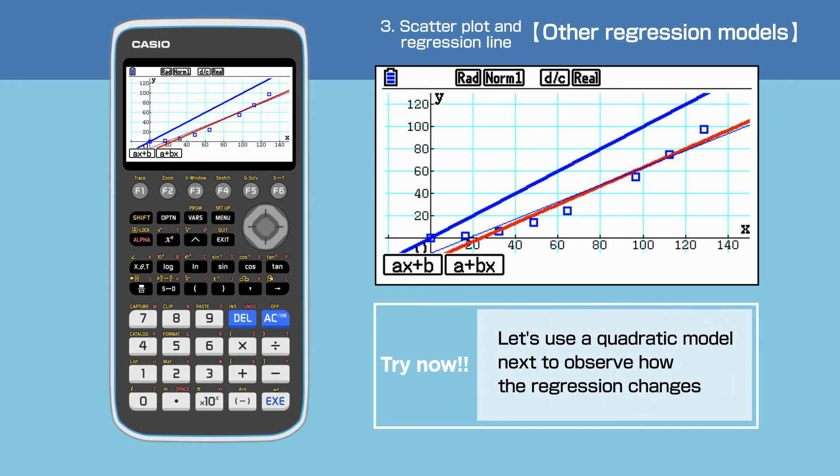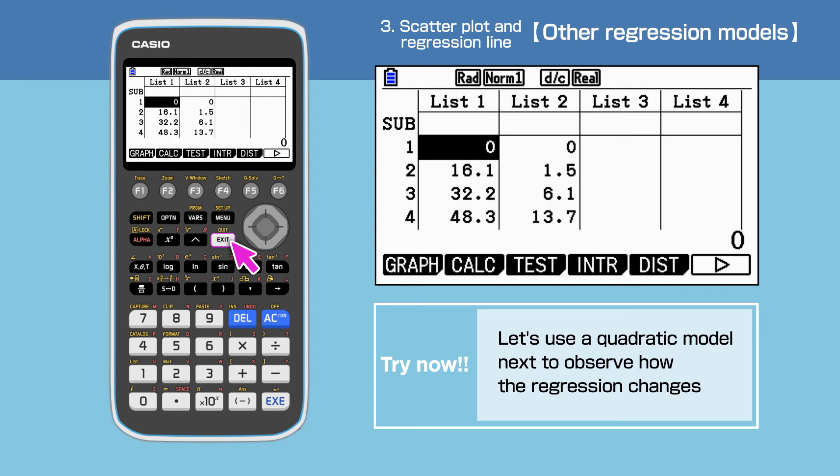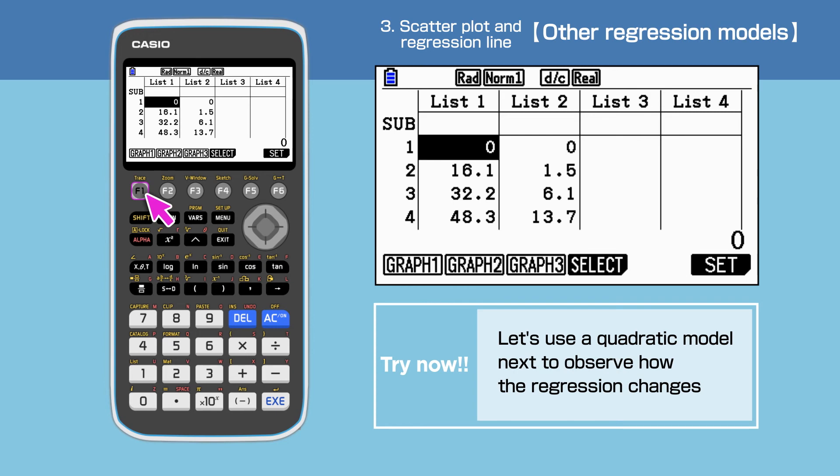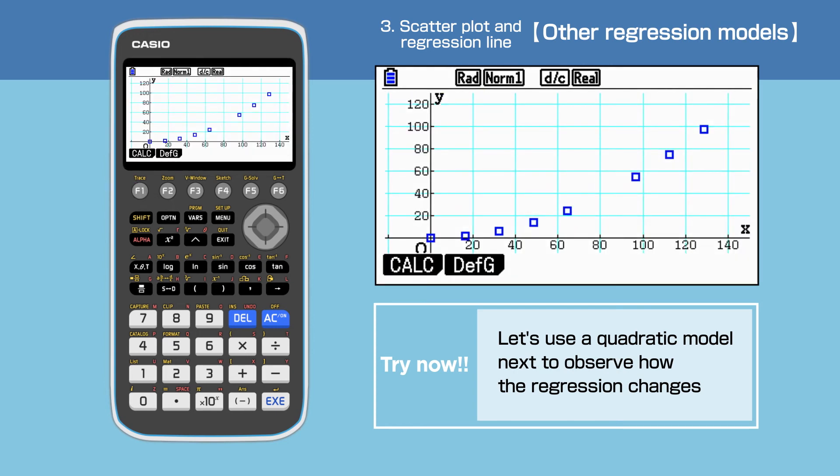In order to look for an even better regression, we are changing the regression model next. Press Shift, then Exit to go back to the screen where we enter the data. Press F1, then F1 to draw the graph. Then press F1 again to display the regression command.